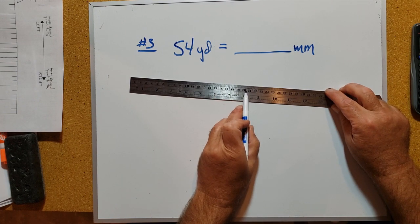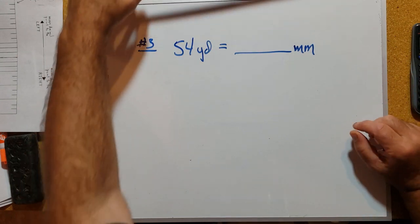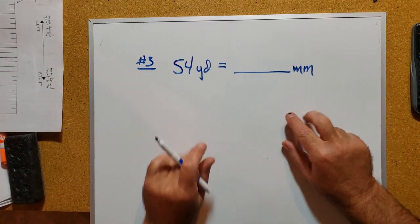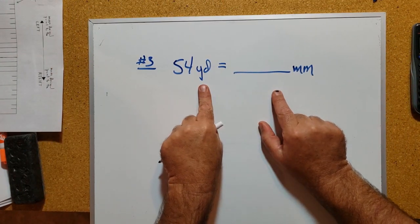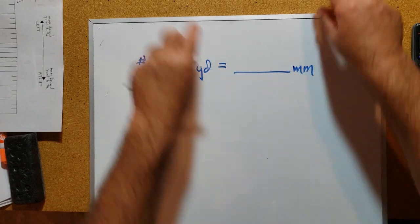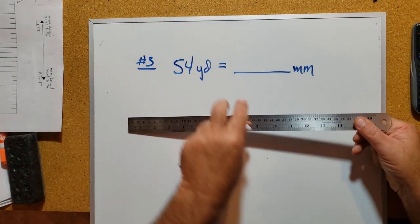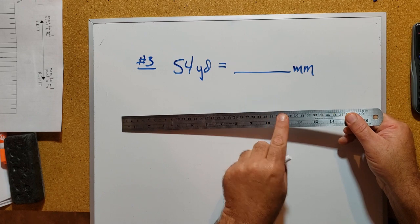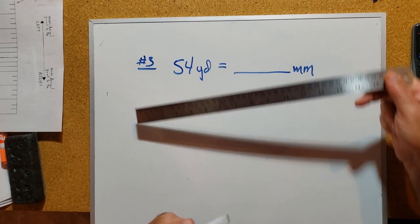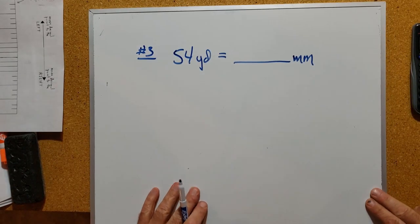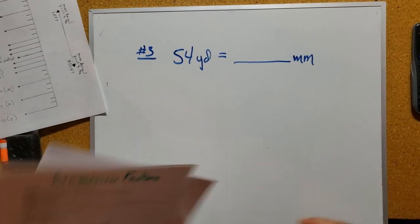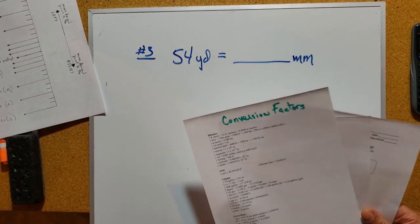Just getting back to the original observation: 54 yards, half a football field - how many of these little tiny millimeters would measure that same distance? What we need here is some conversion factors.